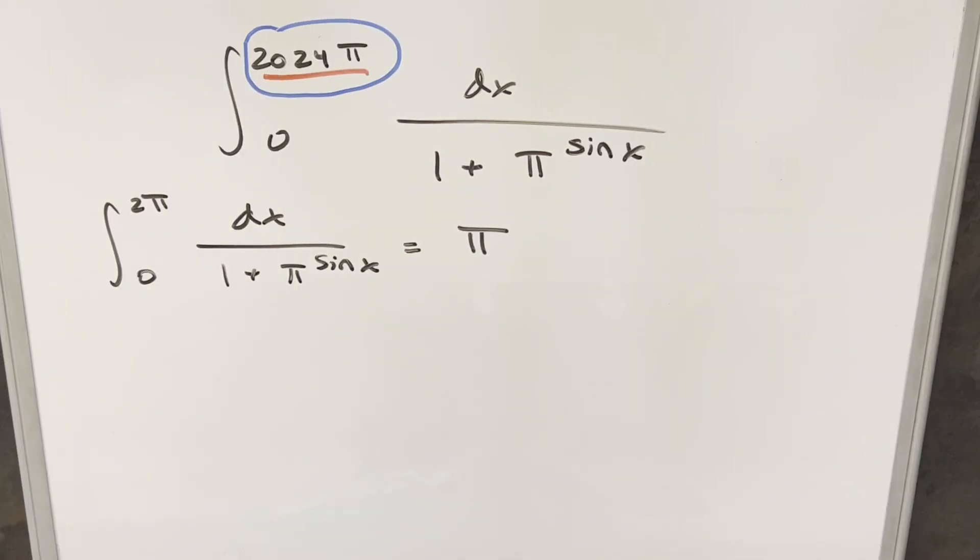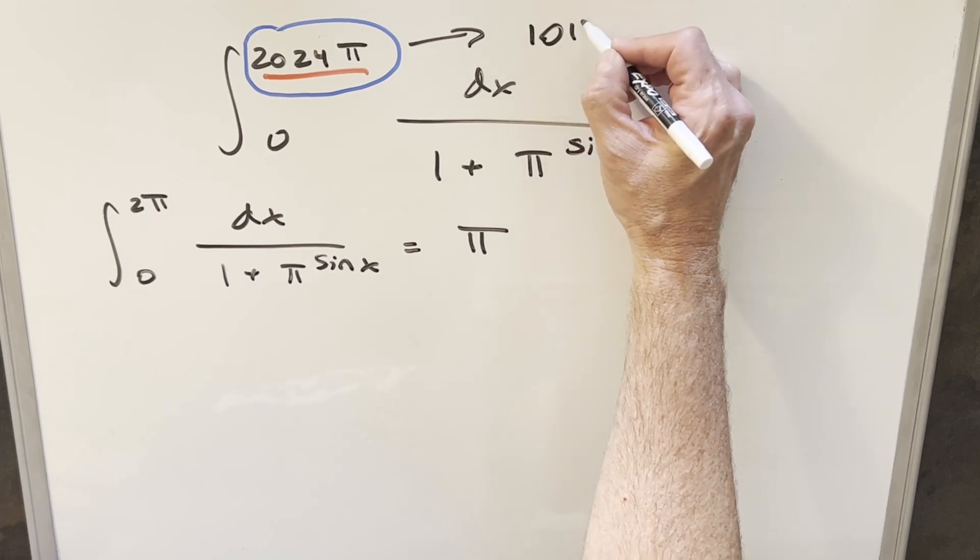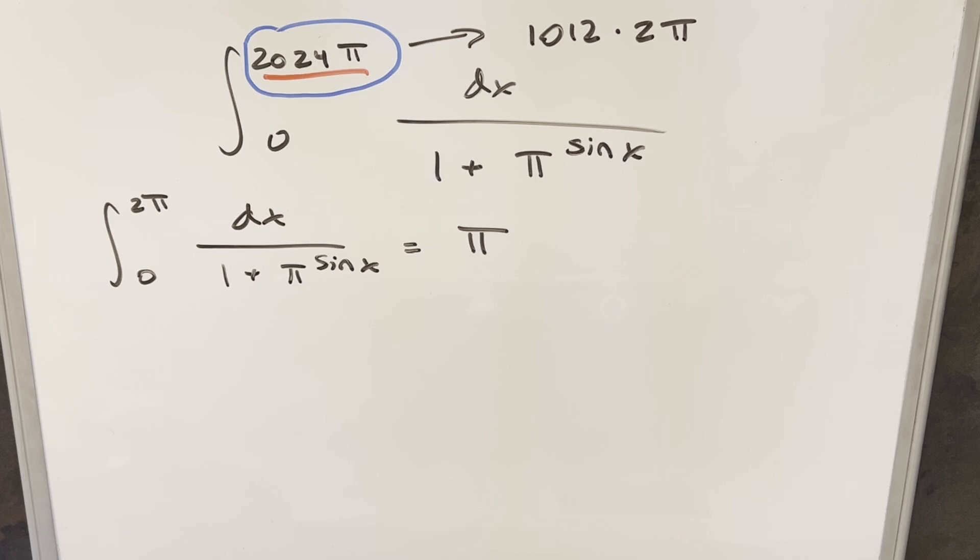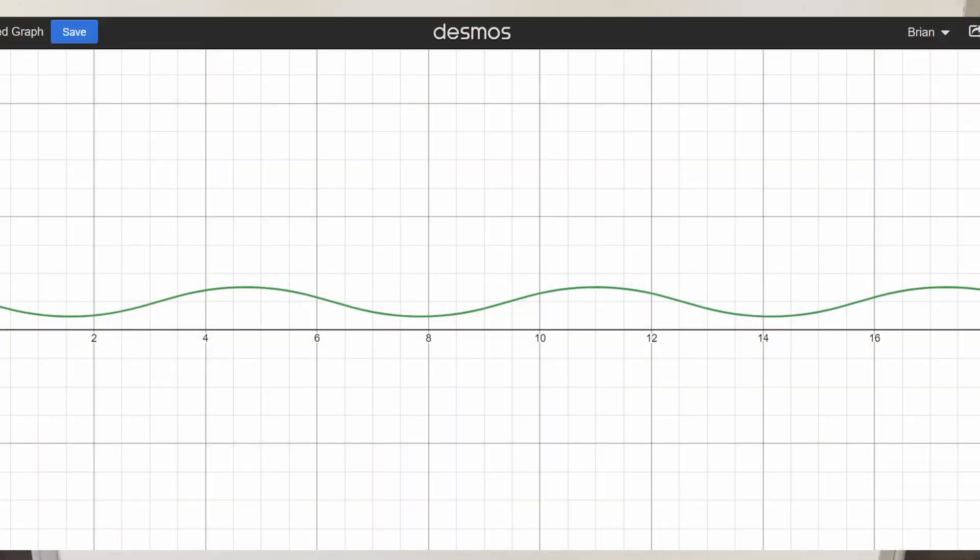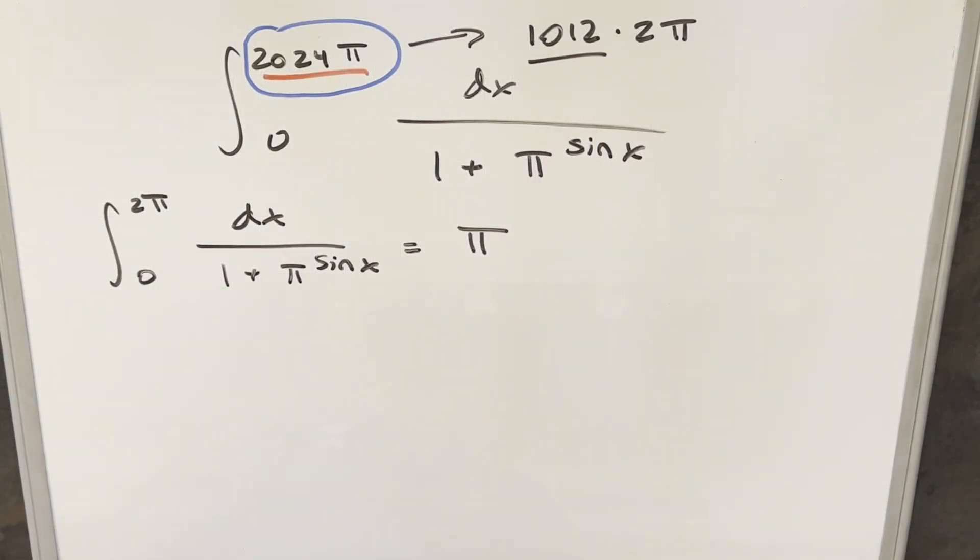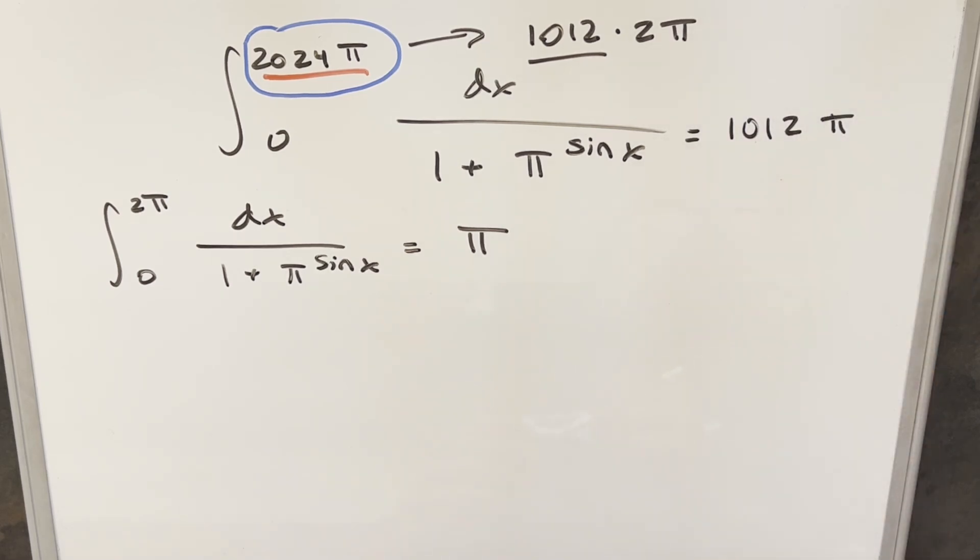Okay, so now at this point, I have a few ways to finish this off. Now one thing I can do for this 2024π, I can actually write this as 1012 times 2π. And probably the easiest way to do this is if you look at the graph, and you see that it's repeating every 2π, you can just see that you're going to have this many 1012 copies of the same thing. The area under the curve is just going to be 1012 times π. So from the graph, we can see a solution really quick, 1012π.